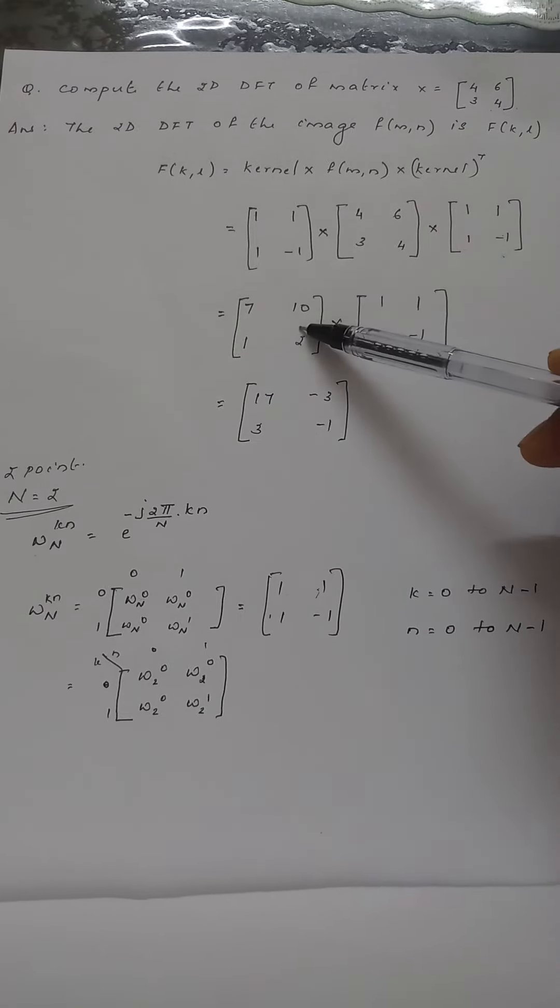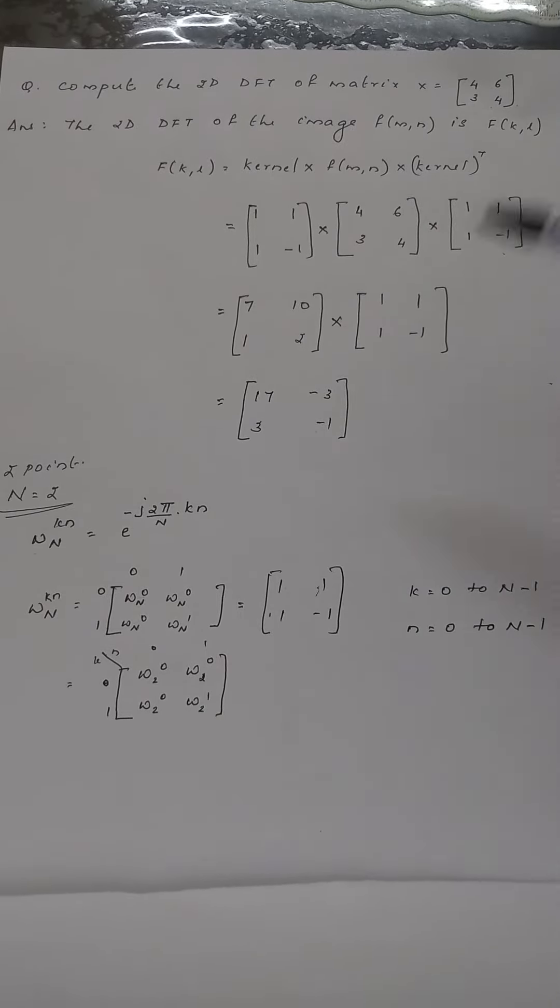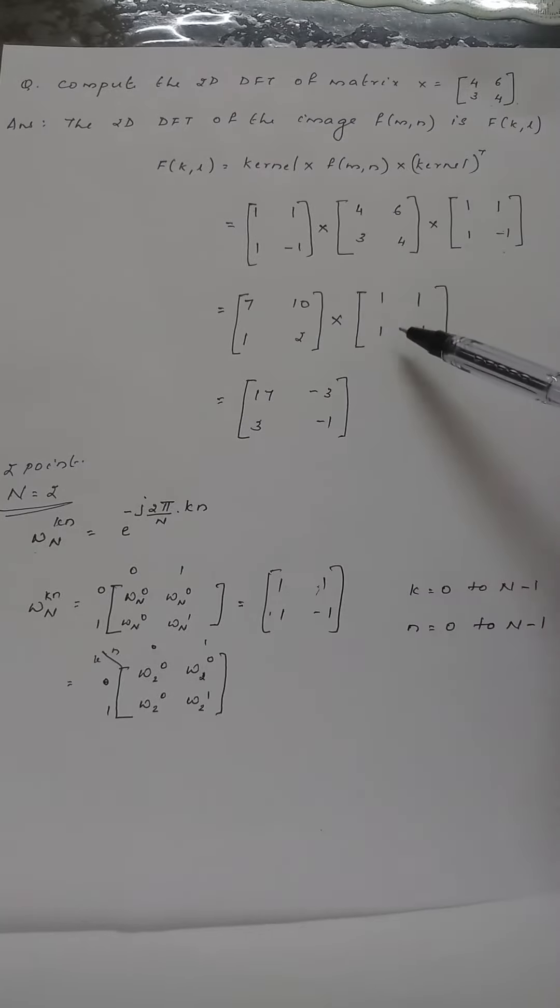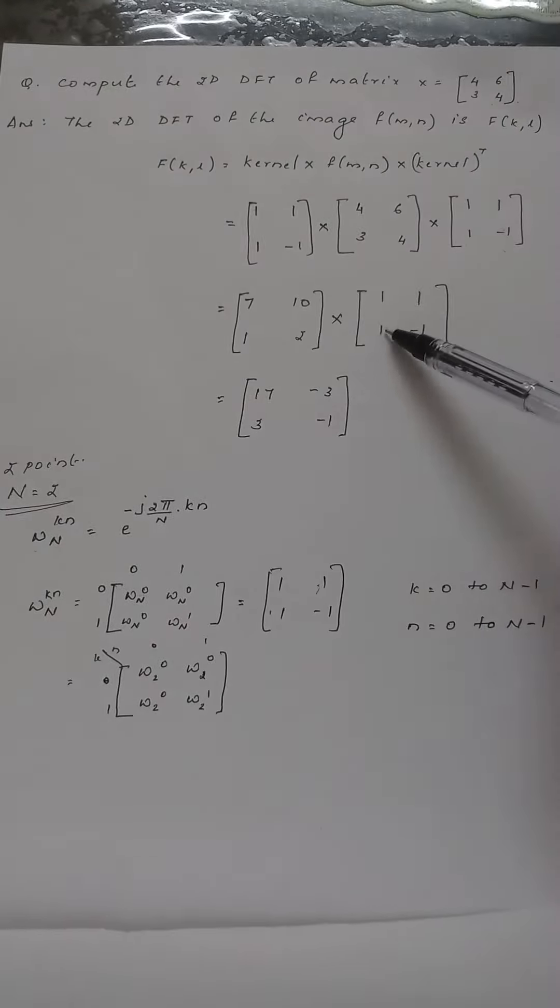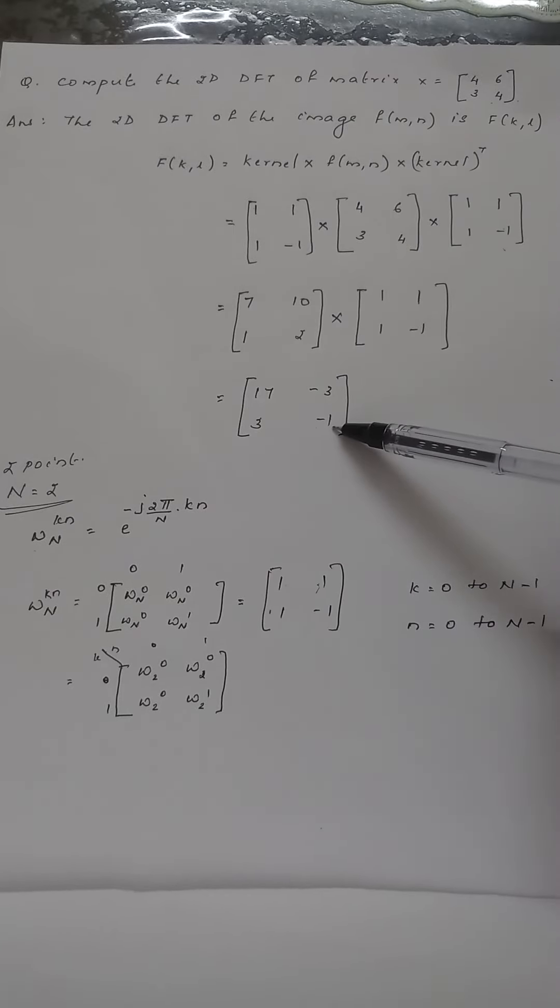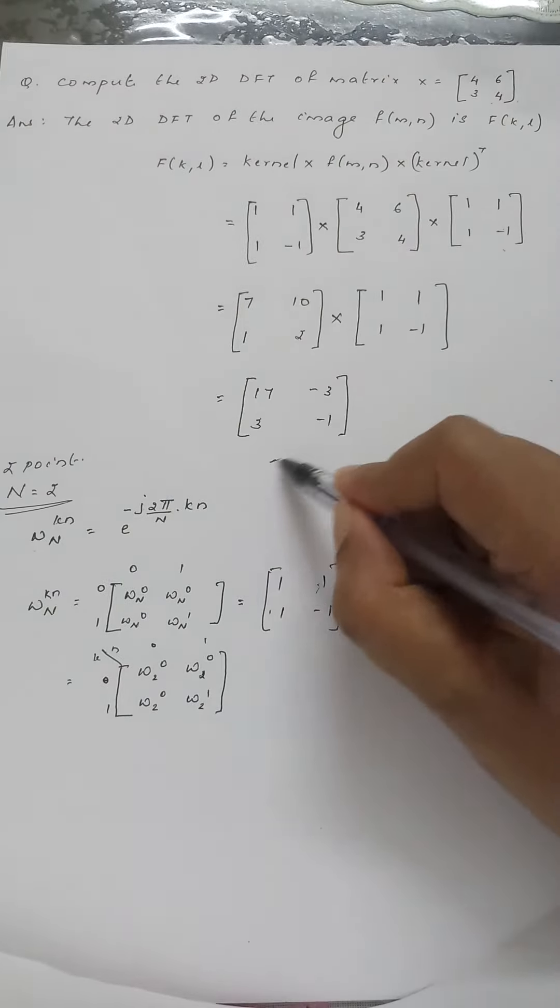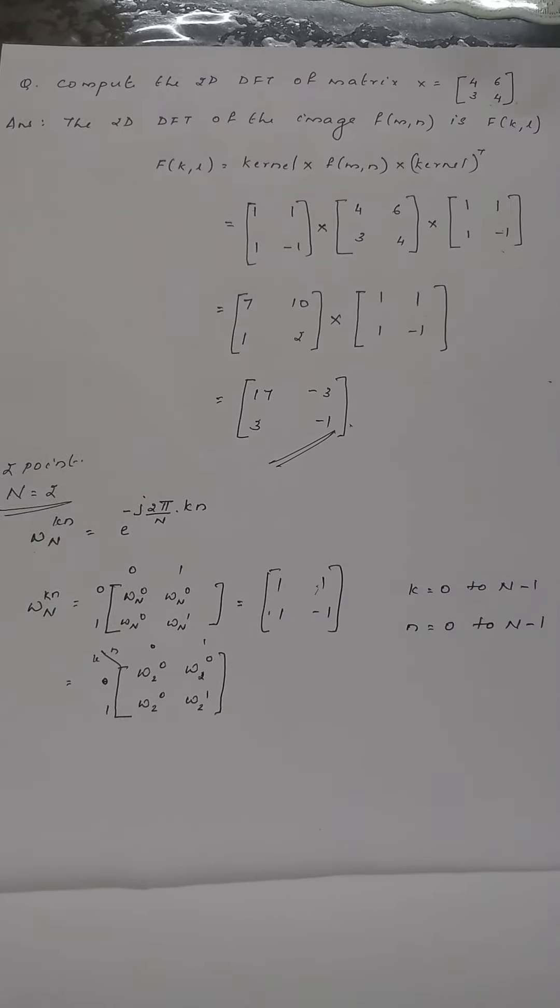Now we multiply that result with kernel transpose: 7 plus 10 equals 17, 7 minus 10 equals -3, 1 plus 2 equals 3, 1 minus 2 equals -1. The final answer is [17 -3; 3 -1]. Thank you.